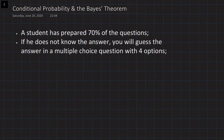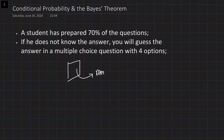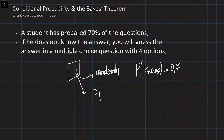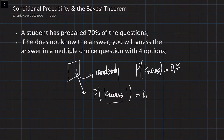A student has prepared 70% of the questions. It means that whenever the student goes to the exam, he chooses one of the questions randomly. The probability that he knows this question — that he has prepared this question — is equal to 0.7. It is also possible that he doesn't know this question. So the probability that he doesn't know the question is denoted as A prime, the complement, and is equal to 0.3. Since these two events are complements, the sum of their probabilities should be equal to 1.